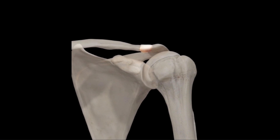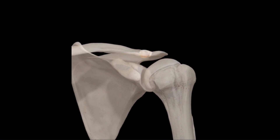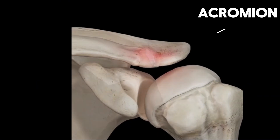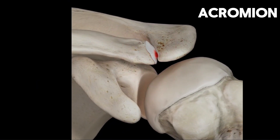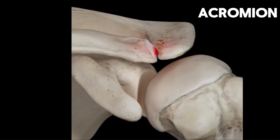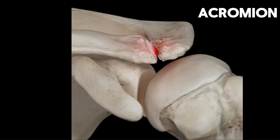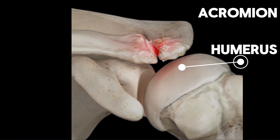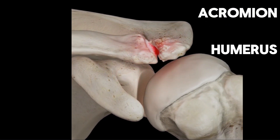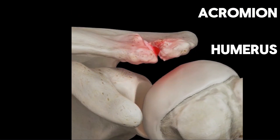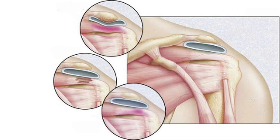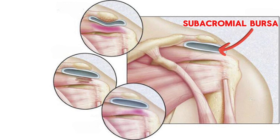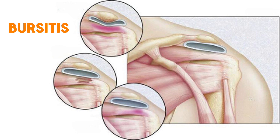Impingement can be caused by overuse and wear and tear of the shoulder around the acromion. This can lead to bone spur formation underneath, making the humerus bone of the arm more likely to catch or impinge from below. Over time, this puts pressure on the fibrous sac called bursa to become inflamed, causing bursitis.